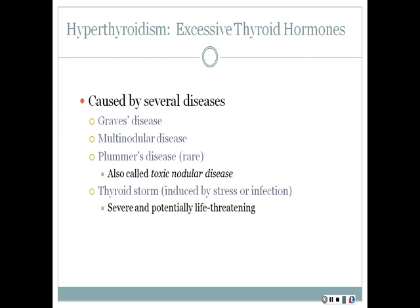Now we'll switch gears and talk about hyperthyroidism, which is excessive thyroid hormones, and this can be caused by several different diseases. Graves' disease is an autoimmune disorder that can cause overproduction of thyroid hormone. Multi-nodular disease involves many nodules which can lead to thyroid dysfunction. Plummer's disease, or toxic nodular disease, is when thyroid nodules function autonomously and cause hyperthyroidism. Finally, a thyroid storm can be induced by stress or infection, where a large amount of thyroid hormone is released into the system in a very short time — this is very serious and can be life-threatening.